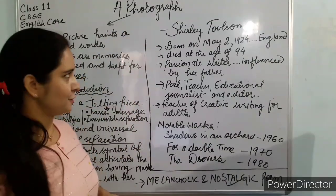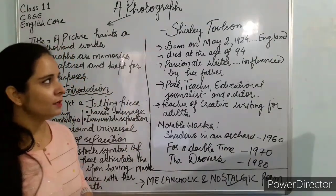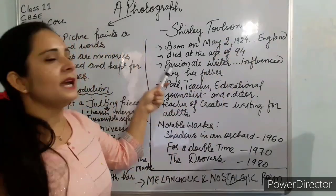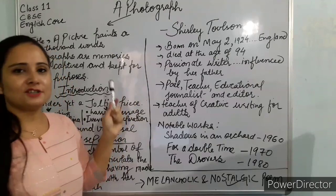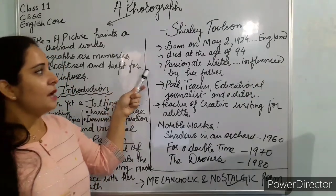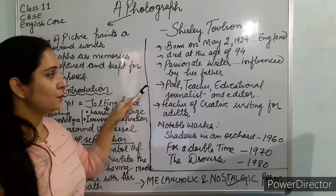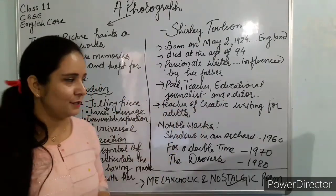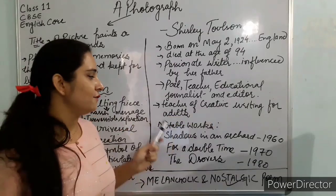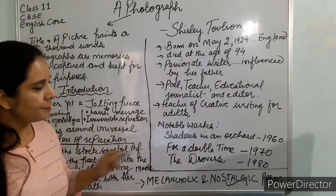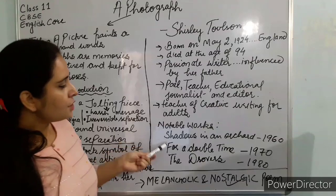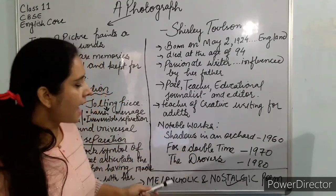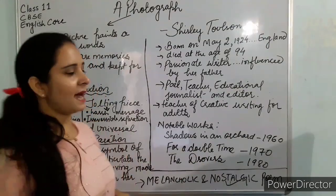Let's know about the poetess first. She was born on May 2, 1924, in England, and died at the age of 94. She was a passionate writer, greatly influenced by her father. She was a poet, teacher, educational journalist, and an editor — also a teacher of creative writing for adults. Her notable works include 'Shadows in an Orchard' written in 1960, and 'For a Double Time and the Drawverse' written in 1980.